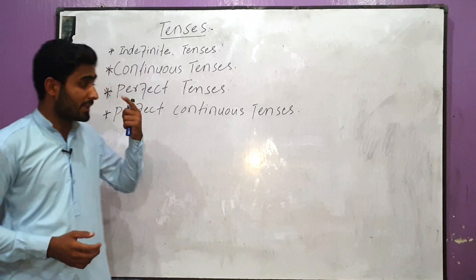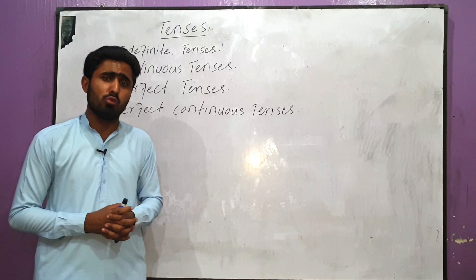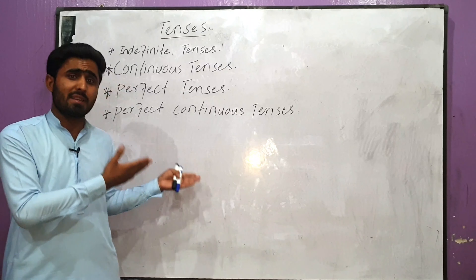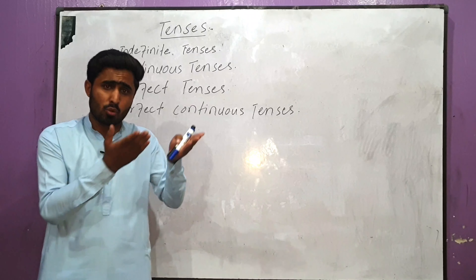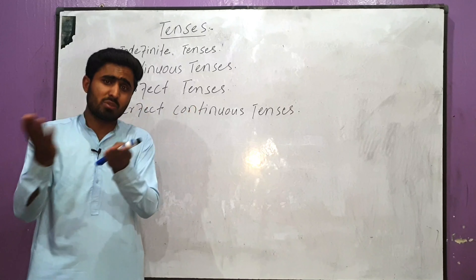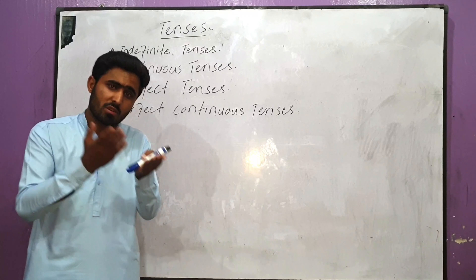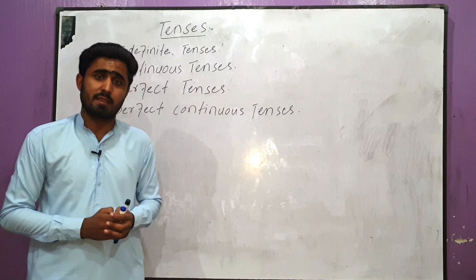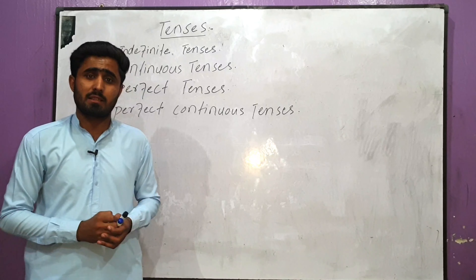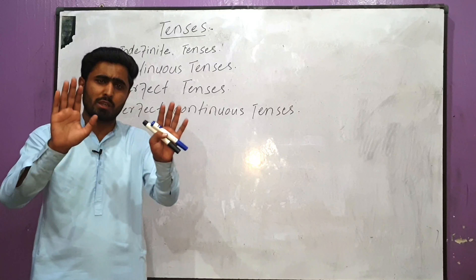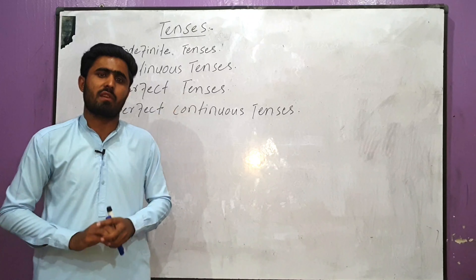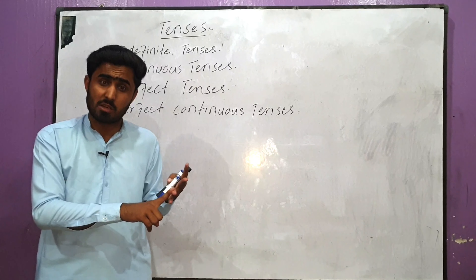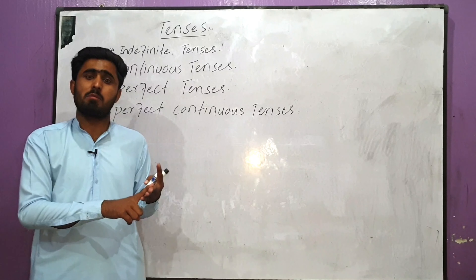First of all, tenses. You will forget the old way we have learned — present, past, future. This is the best way of understanding tenses. We will study simple tenses first, then continuous, then perfect tenses, then perfect continuous tenses. My advice is that if a student has full command of tenses and a good way of understanding, he can solve comprehension, sentence structure, and sentence correction. He can solve all parts easily.